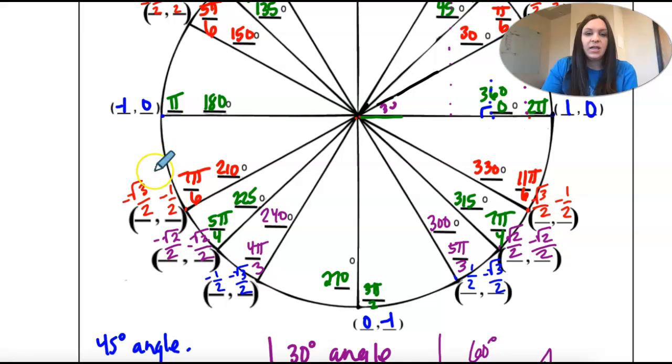The point is negative square root of 3 over 2, and negative 1 half.